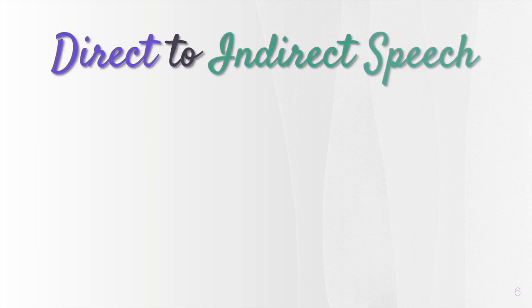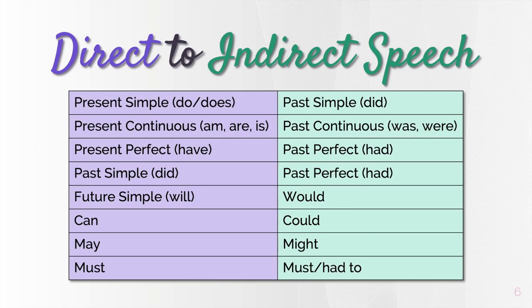Let's see how the tenses change from direct speech on the left to indirect speech on the right. Present simple (do/does) changes to past simple (did). Present continuous (am/are/is) changes to past continuous (was/were). Present perfect (have) changes to past perfect (had). Past simple (did) changes to past perfect (had). Future simple (will) changes to would. Can changes to could. May changes to might. Must changes to must or had to — your choice.